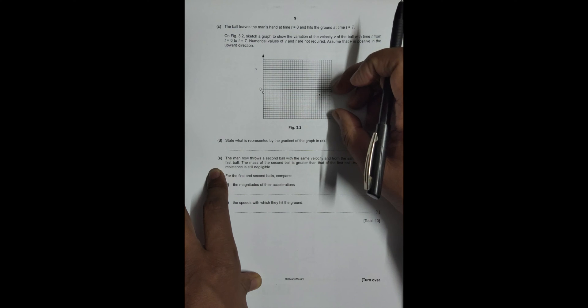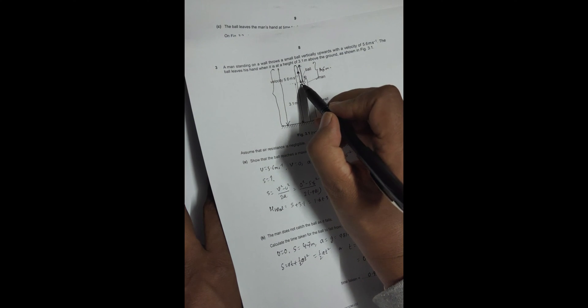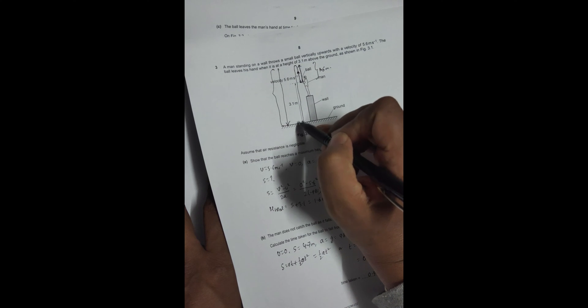This velocity, when it reaches the ground, has to have more speed than this, because the speed here and here is the same, so here the speed should be more. So in order to have a better idea, what I can do is for this downward motion—